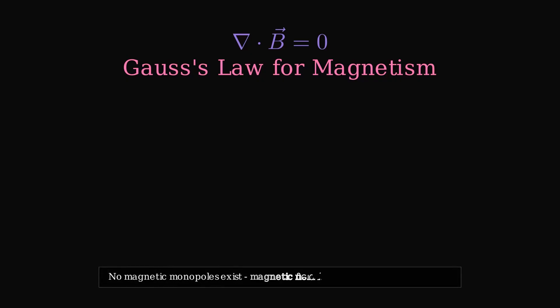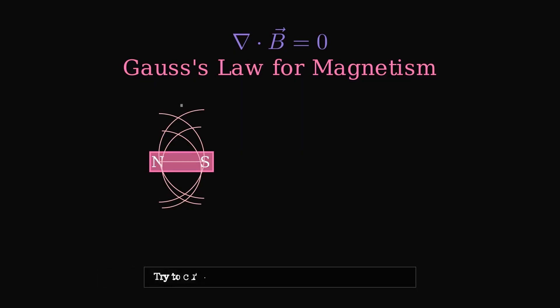Gauss's law for magnetism reveals something profound. No magnetic monopoles exist. Magnetic field lines always form closed loops. Try to cut a magnet to separate north and south poles. Each piece becomes a complete magnet.